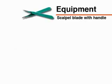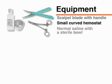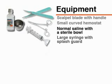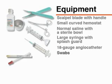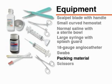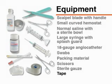Items important for the incision and drainage itself include a scalpel blade with handle, a small curved hemostat, normal saline with a sterile bowl, and a large syringe with a splash guard or a needleless 18 gauge angiocatheter for irrigation of the wound. Swabs for bacterial culture, wound packing material, scissors, gauze, and tape should all be available to complete the procedure and dress the wound.